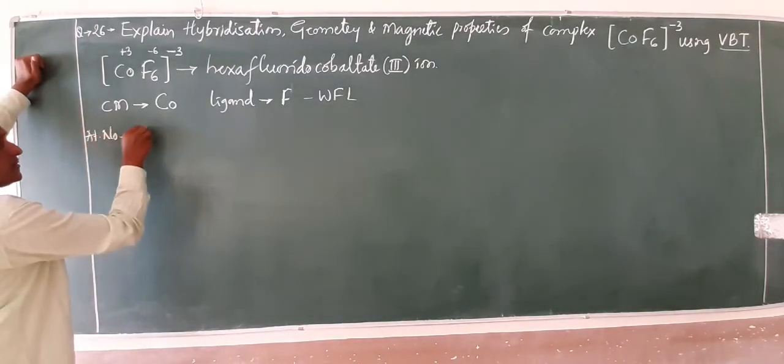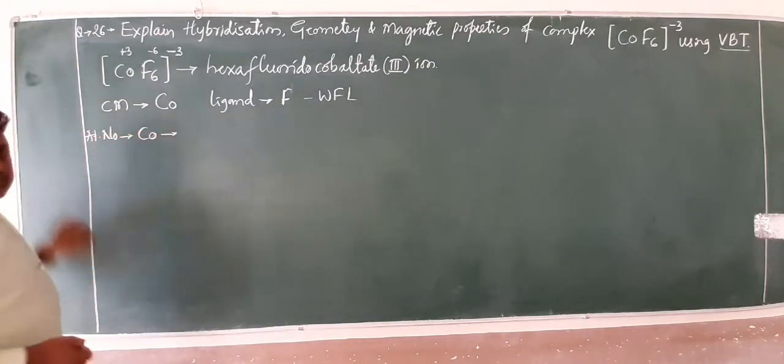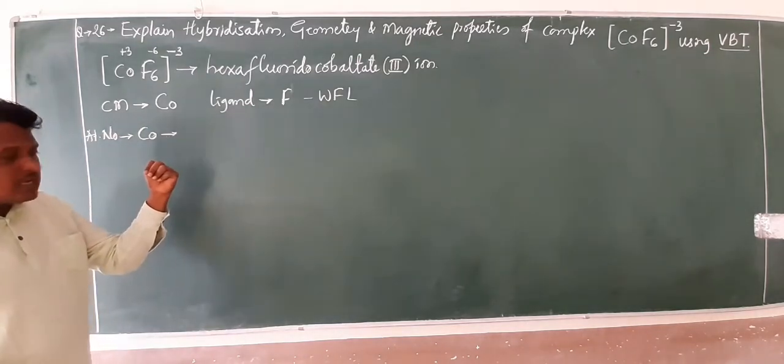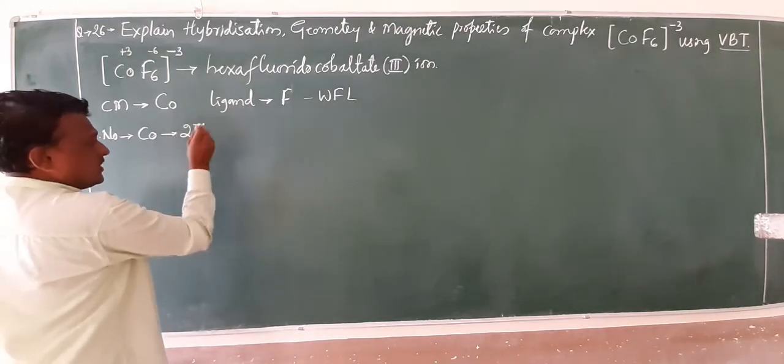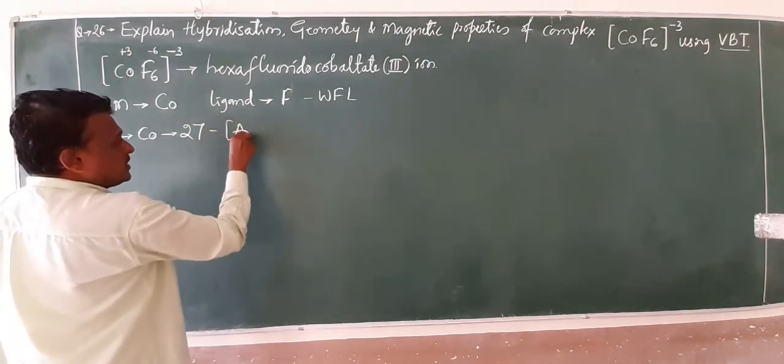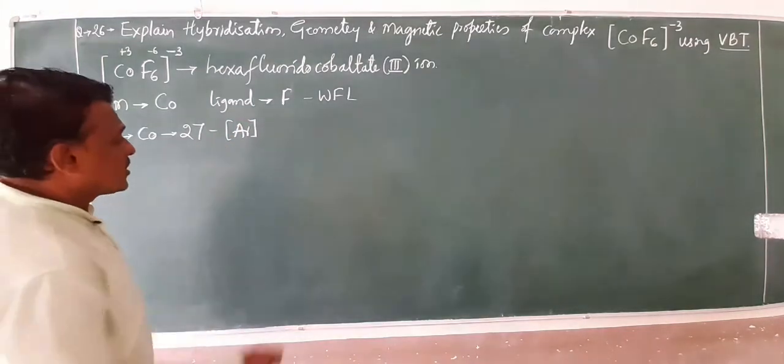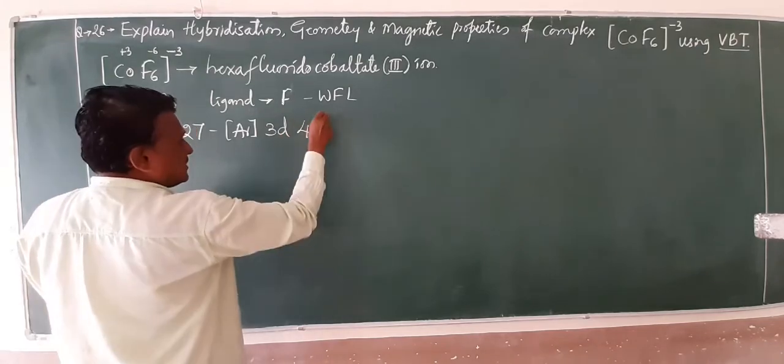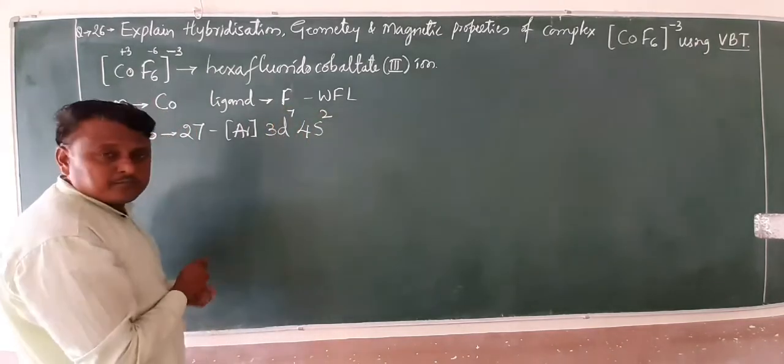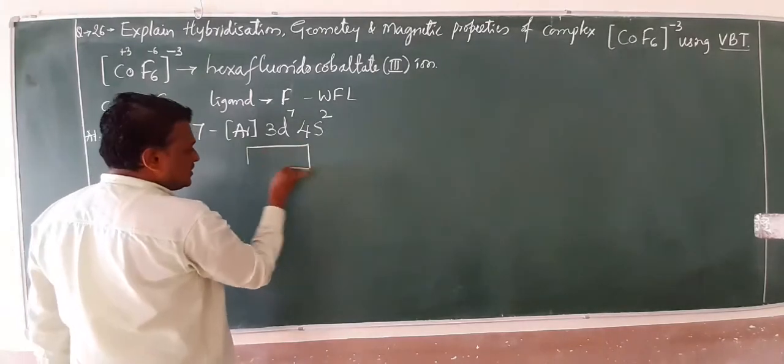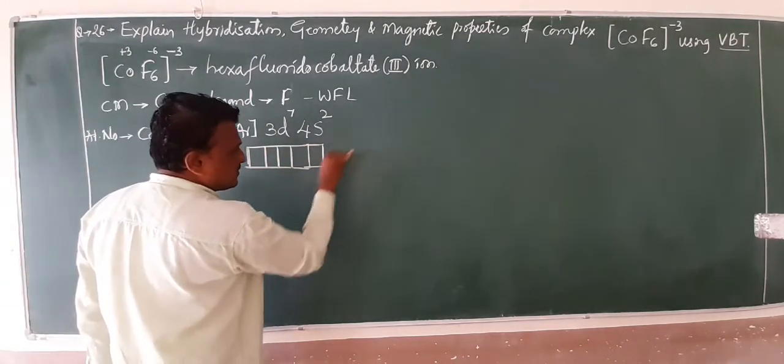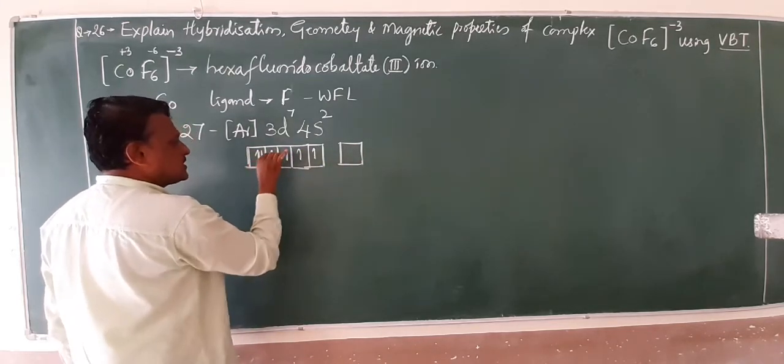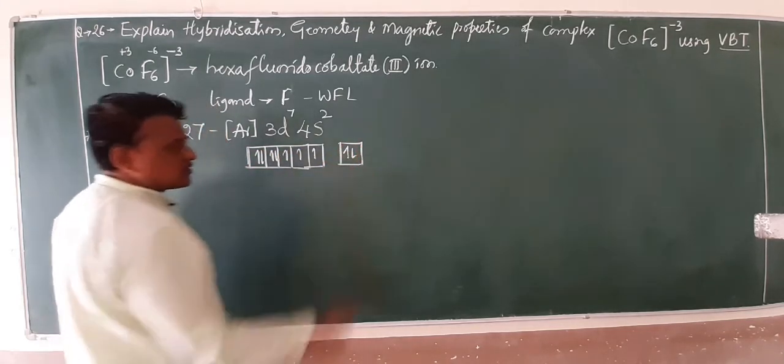Let us begin, friends. Atomic number of cobalt - you have to count: scandium, titanium, vanadium, chromium, manganese, iron, this is cobalt. Cobalt is 27, atomic number 27. Based on this: argon 3d7 4s2. This is your splitting of electrons: 1, 2, 3, 4, 5, 6, 7, and 2 electrons in 4s.